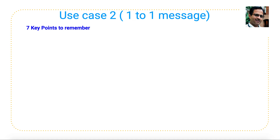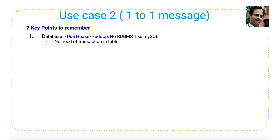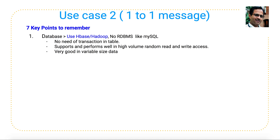Before going into use case 2, one-on-one messaging, I want to make sure we remember these seven key points. The first is the database — I'm going to use HBase, deployed in Hadoop, not a relational database like MySQL. The reason I'm not using MySQL is we don't want transactions in the table. HBase performs very well in high-volume random reads and writes, and is very good with variable-size data.